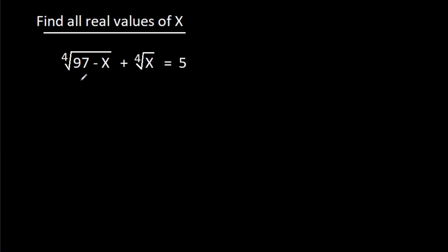In this video, we have been given that the 4th root of (97 minus x) minus the 4th root of x is equal to 5, and we have to find all real values of x.